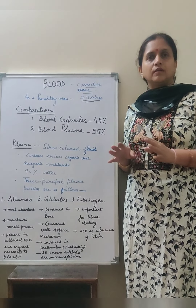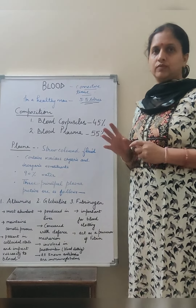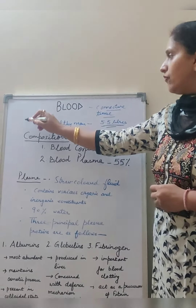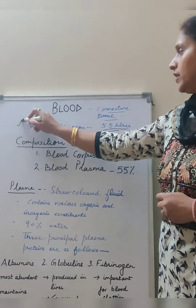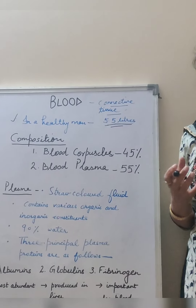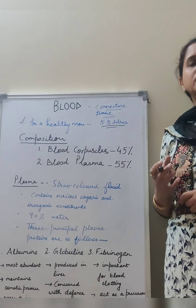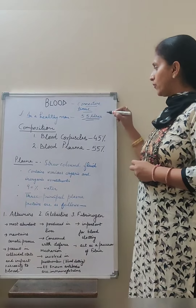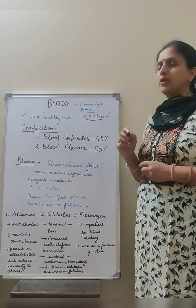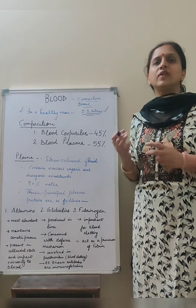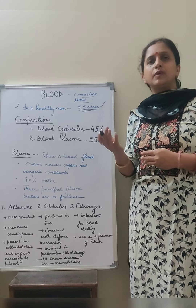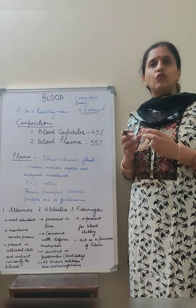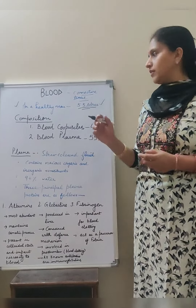Blood is a connective tissue in the form of liquid. Now, what is its composition? First I should tell what is its volume in a healthy person. If a healthy person weighs about 70 kg, then the volume of blood in the body will be approximately 5.5 kg. Volume is variable, not a fixed one — if weight is more, it may be more; if weight is less, volume may be less.